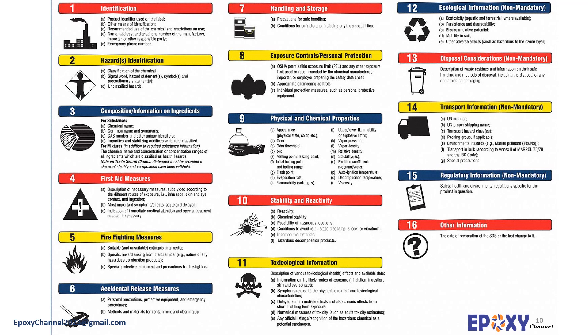Here all the sections of an SDS document will be introduced. Section 1 provides the identification of the substance, mixture, and identification of the company. In this section, product identifications, relevant identified uses of the substance or mixture, uses advised against, details of the supplier, and emergency telephone numbers are provided. Section 2 is Hazard Identification. In this section, classification of the substance or mixtures, label elements, and other hazards are provided.